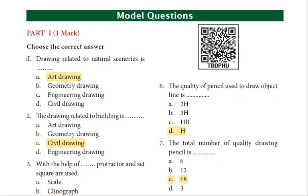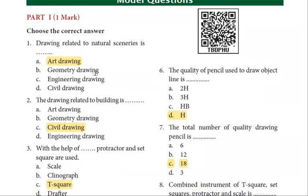First question: Drawing related to natural scenery. Natural scenery draw - art drawing. That is the geometrical properties, geometrical diagram - square, rectangle. This is geometrical drawing. Engineering drawing - civil later drawings, electrical drawing, mechanical drawing. This is engineering drawing.